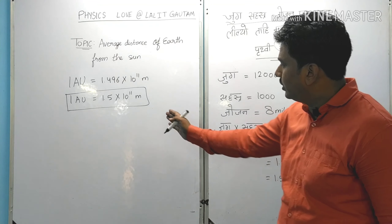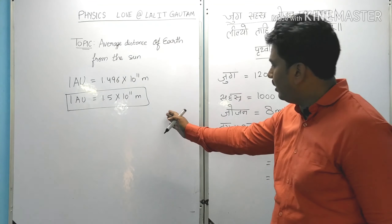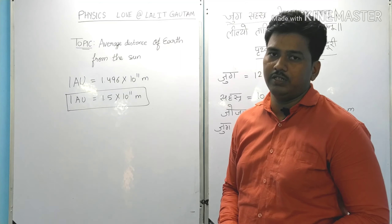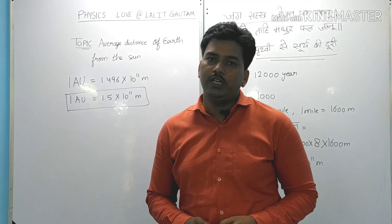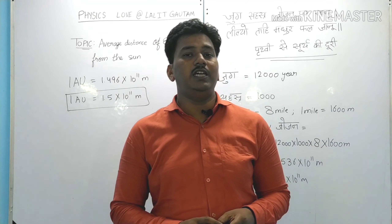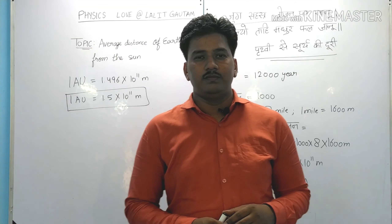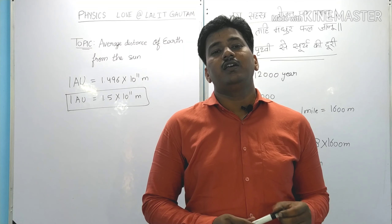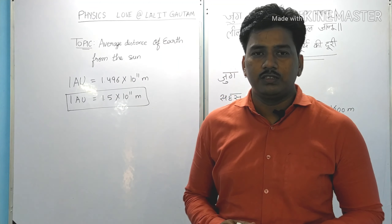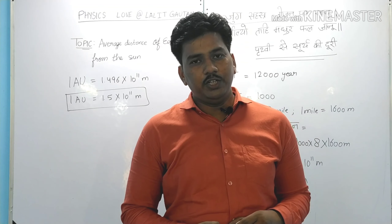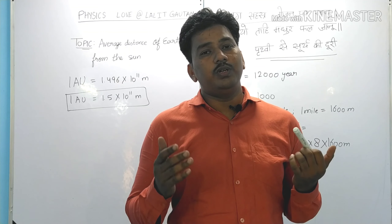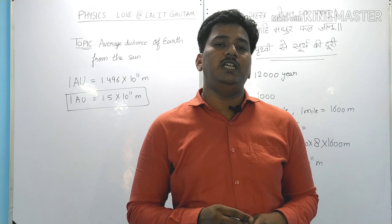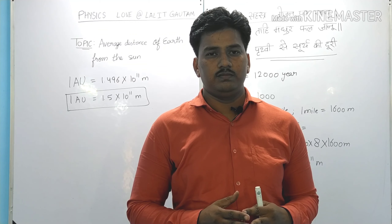This is the value given by eminent physics, and this is the value calculated from the chopai of Hanuman Chalisa. We can compare these two values — both values are equal to 1.5 × 10¹¹ meters. From this calculation, we can conclude how technically correct the Hanuman Chalisa is.